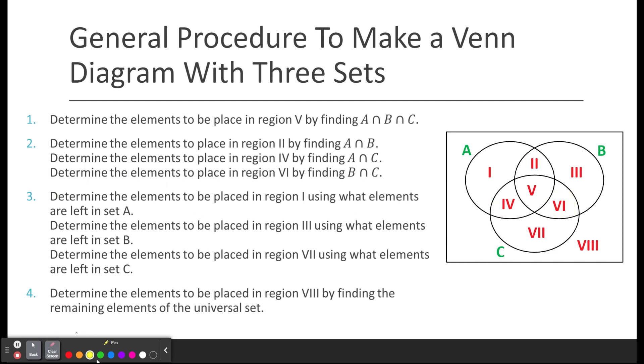Then, determine the elements to be placed in region 1 using what elements are left in set A, then determine what's in region 3 by using what's left in B, and then determine what needs to go in C. Then lastly, put the ones in 8, the leftovers if you will, outside of our 3 Venn circles inside the universal set.